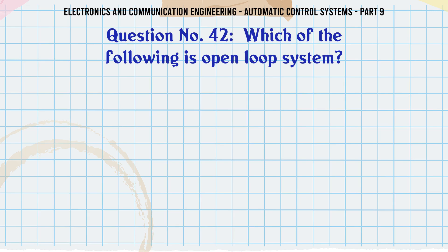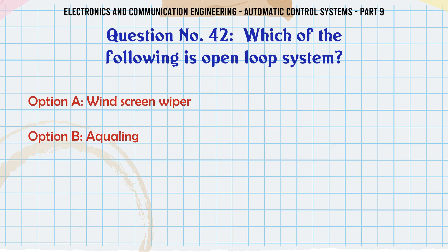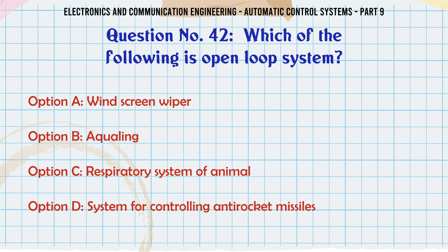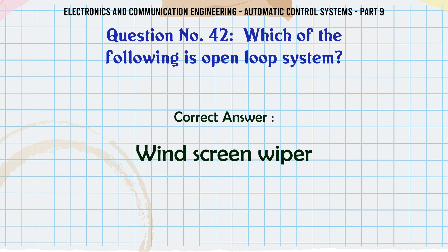Which of the following is an open loop system? A. Windscreen wiper, B. Aqualine, C. Respiratory system of animal, D. System for controlling anti-rocket missiles. The correct answer is: Windscreen wiper.